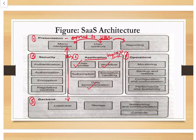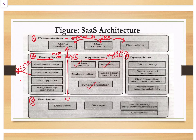The third layer is the security layer — the most important layer in the SaaS architecture. It handles authentication and authorization of users, as well as data encryption. These are the important tasks performed by the security layer.